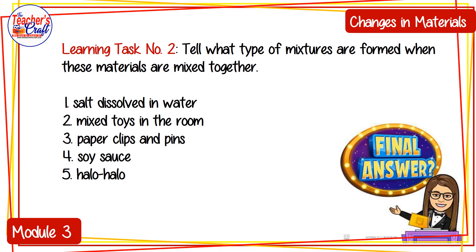Next, tell what type of mixture is formed when these materials are mixed together: 1. Salt dissolved in water. 2. Mixed toys in the room. 3. Paper clips and pins. 4. Soy sauce. 5. Halo-halo. If you are not done answering this task, you can pause this video.